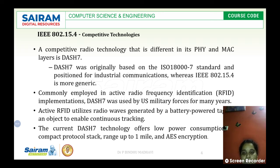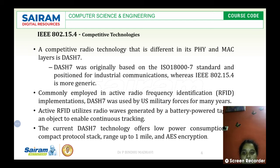DASH-7 is nothing but a direct alliance protocol — it is an open source wireless sensor and actuator network protocol with a specified frequency range. Every protocol has its own frequency to establish communication and coordination within the network. This open source wireless sensor and actuator protocol operates with frequency ranges from 433 MHz up to 900 or 868 MHz.